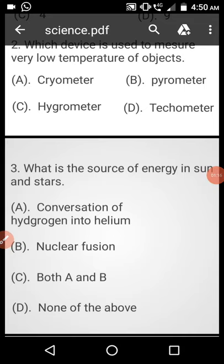Question number 3: What is the source of energy in sun and stars? Option A: Conversion of hydrogen into helium, Option B: Nuclear fusion, Option C: Both A and B, Option D: None of these. Answer is Option C.